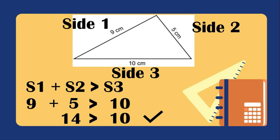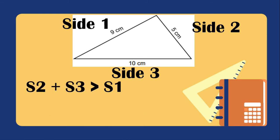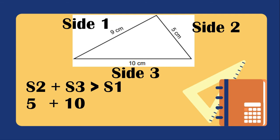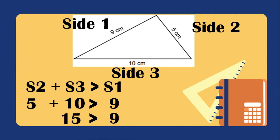Let's have the second combination. We will add side 2 plus side 3, which should be greater than side 1. Side 2 is 5, side 3 is 10, and it should be greater than side 1, which is 9. We have 5 plus 10 equals 15, and 15 is greater than 9. This is correct.